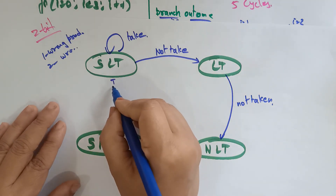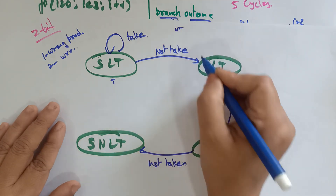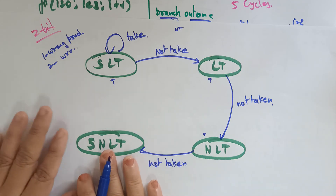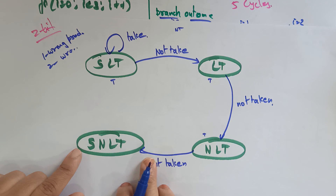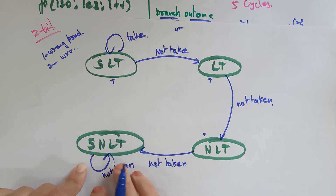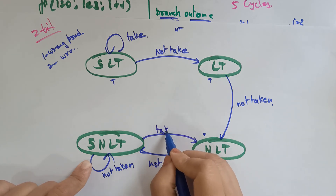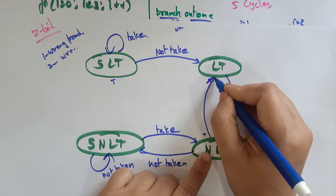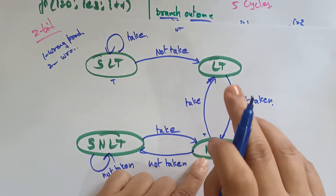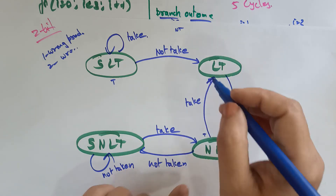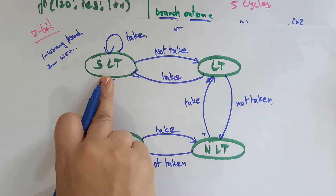From NLT, the outcome says taken (T). Still I predict not taken — that is one wrong prediction. But still it is saying take — a second wrong prediction. After two wrong predictions, NLT changes to LT (likely to be taken). Now I change my complete mind and move to strong likely to be taken (SLT), taking the branch.